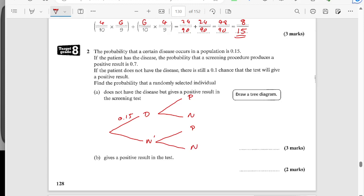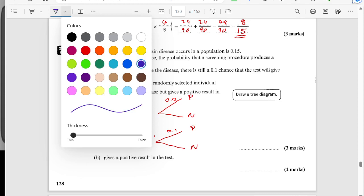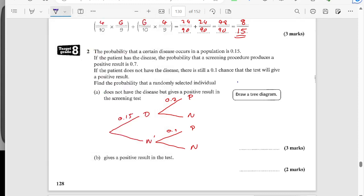And then the question states, if the patient has the disease, the probability that the screen produces a positive result will be 0.7. If the patient does not have the disease, then there is still a 0.1 chance. Right. So I'm going to fill in the rest of the values by working them out. So if the probability of the disease is 0.15, the probability of not having the disease is 0.85, the positive result is 0.7, negative is 0.3.